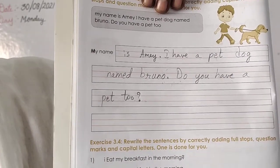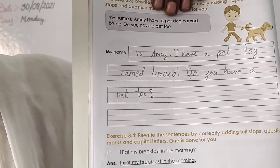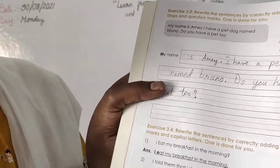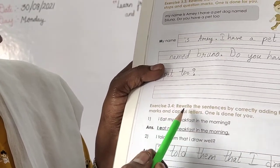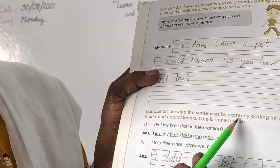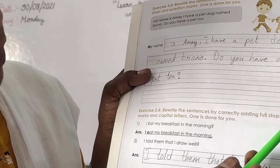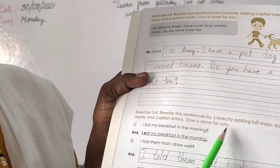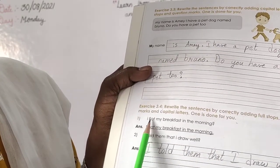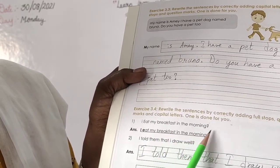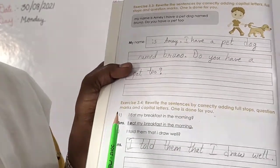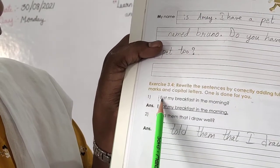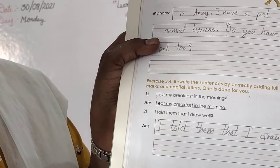Are you copying, children? Now it's completed. Watch the video carefully and do the class work. Then next, Exercise 3.4. Rewrite the sentences by correctly adding full stops, question marks and capital letters. One is done for you. See here — I eat my breakfast in the morning.